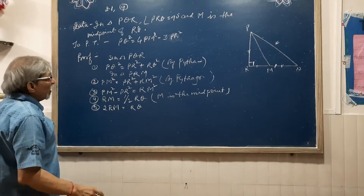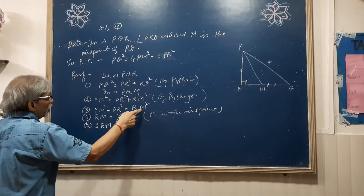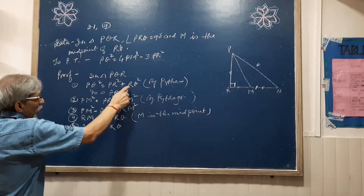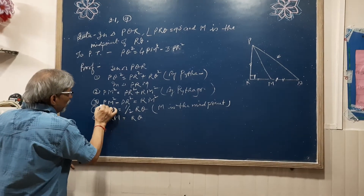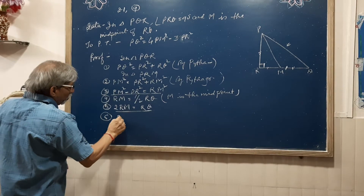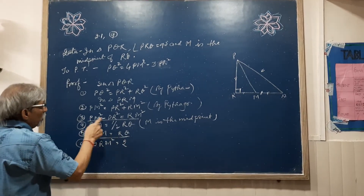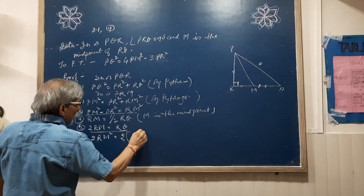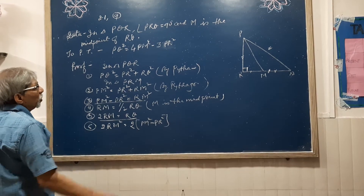Now, if we substitute this value, RM squared equals PM squared minus PR squared. We are going to substitute the value of RM. Equating these statements, we get 2 into RM squared equals 2 into PM squared minus PR squared.